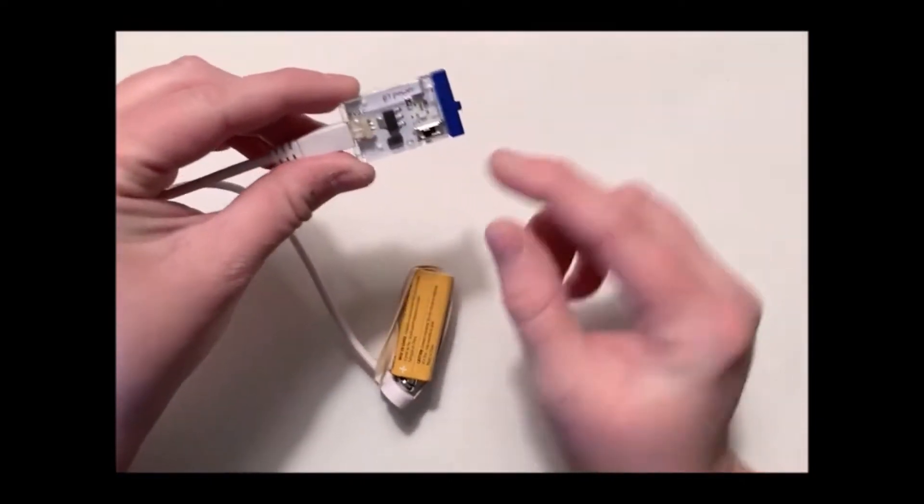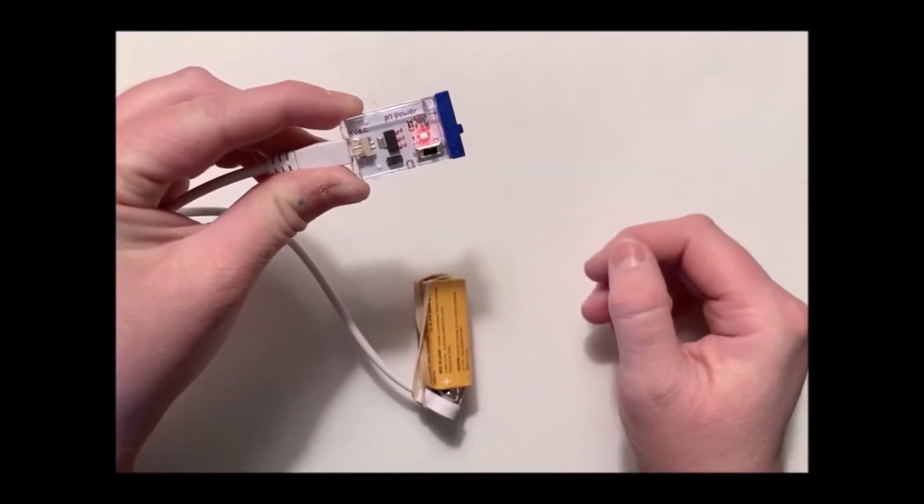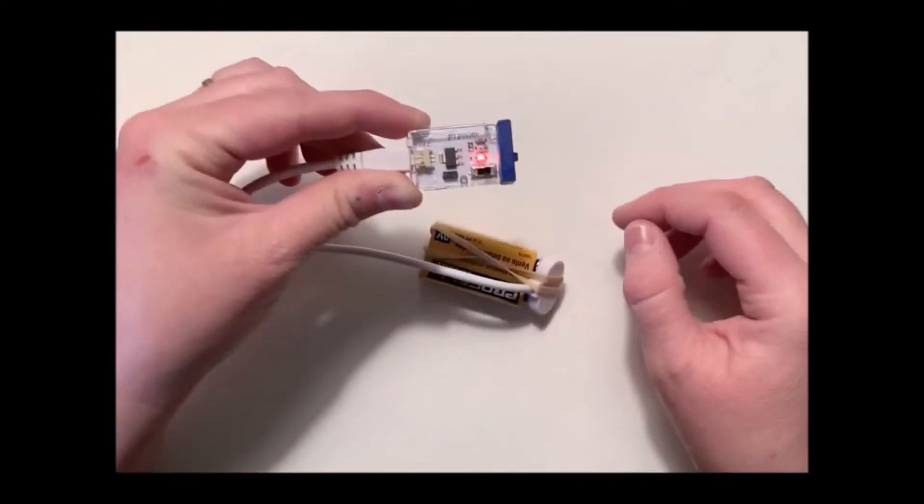Now you'll know that the power function is working if you flip the switch and you see a red light. That means that your power is on and you're ready to connect it to an output.